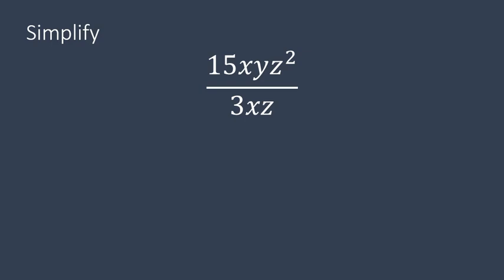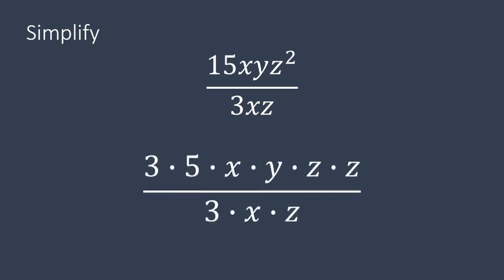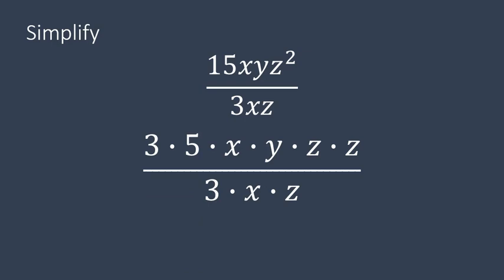15xyz squared divided by 3xz. What this means is, and I've taken 15 and I've made it into its prime factors of 3 times 5. The reason I did that is because 3 is a common factor on the denominator and in the numerator. So 3 divided by 3 is 1, let's get rid of some of those, right? So I made it 3 times 5, which is 15, then x times y times z times z. I wrote it all out, just expanded everything out, and then on the bottom I have 3 times x times z.